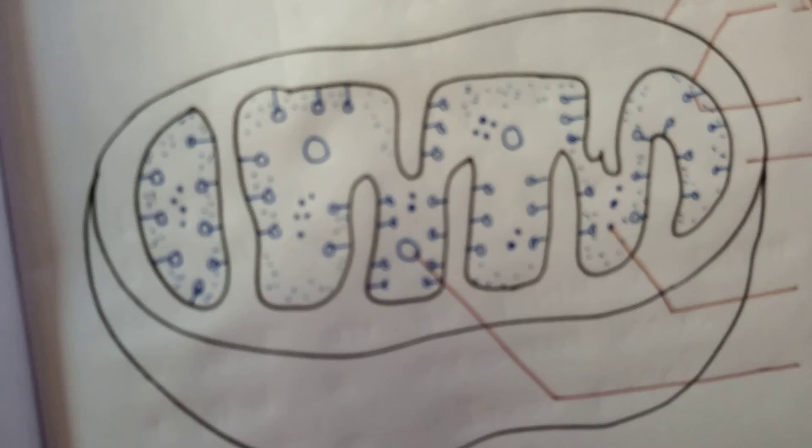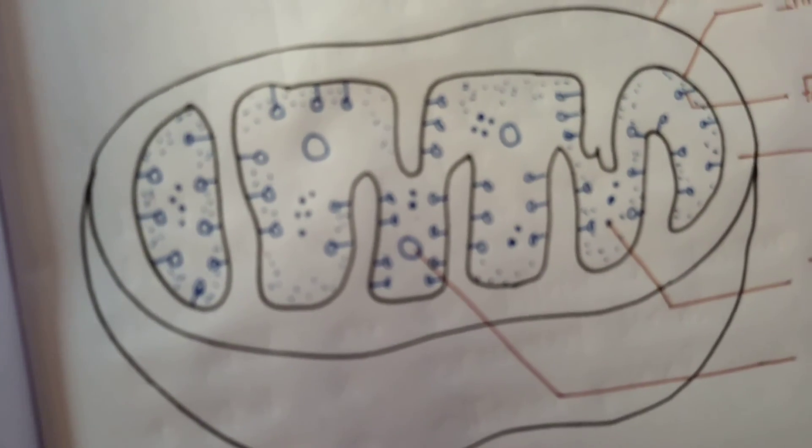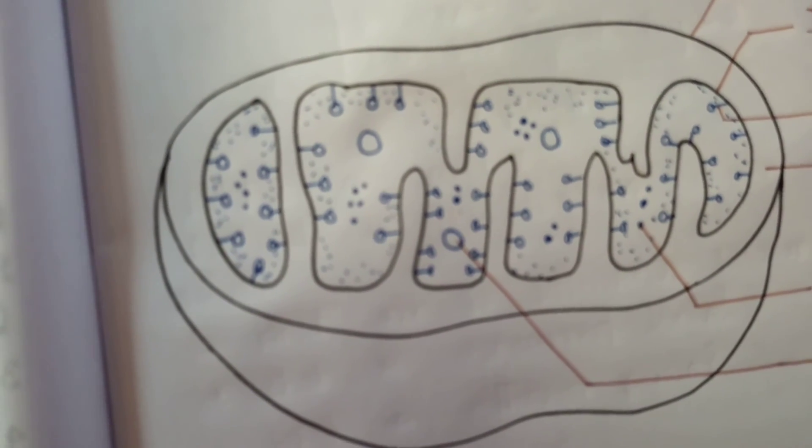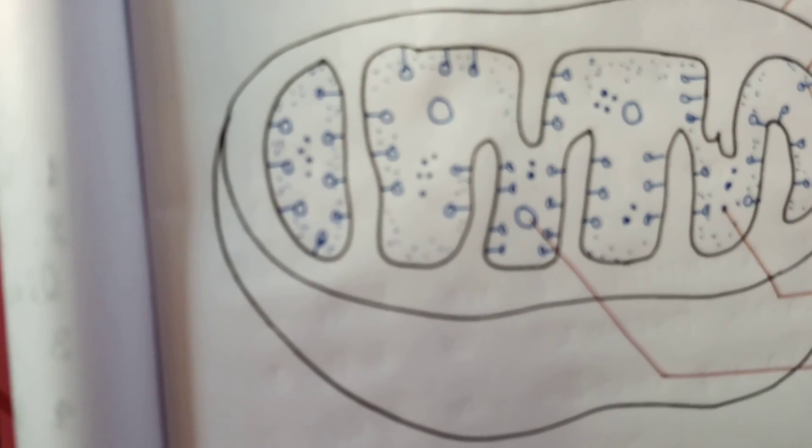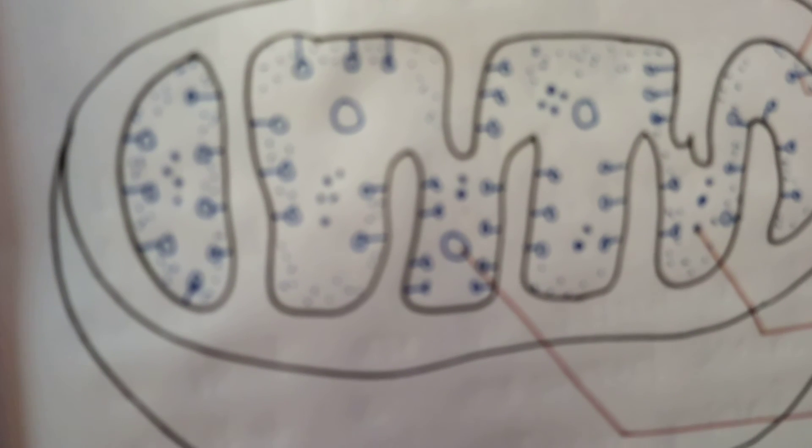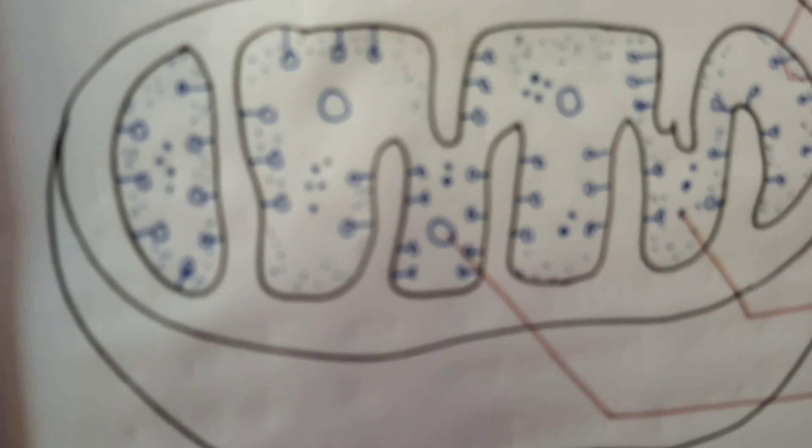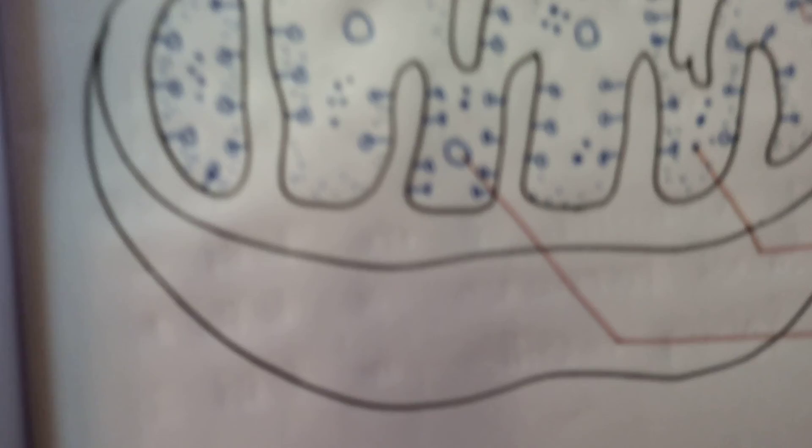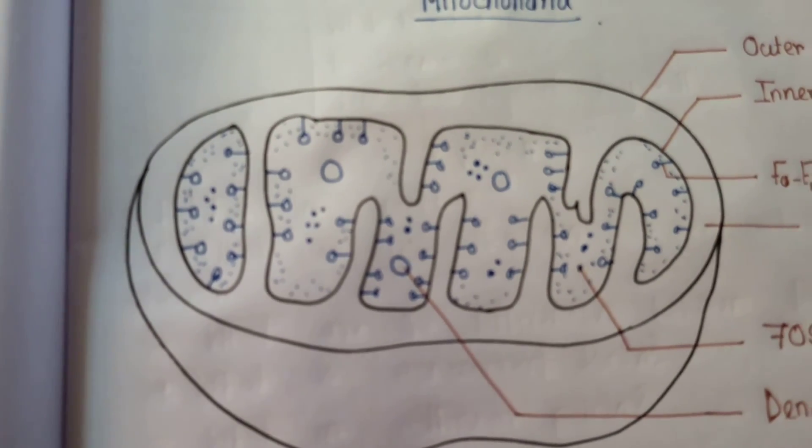There are certain features common between mitochondria and bacteria. In bacterial cells, you will find infoldings called mesosomes. Mitochondrial cristae are similar to mesosomes. Both have circular DNA, both multiply by binary fission, and both have 70S ribosomes. These are the common features found between mitochondria and bacteria. So this was all about mitochondria.